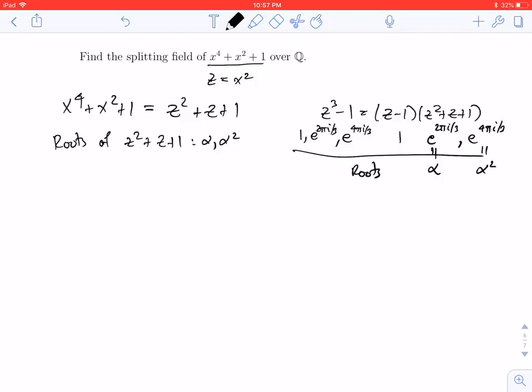But I wanted the roots of x to the 4th plus x squared plus 1. I know that z equals x squared, so my roots are the square roots of these. I'm going to raise them to the 1 half power. So the roots of x to the 4th plus x squared plus 1 are plus or minus alpha to the 1 half, and plus or minus alpha squared to the 1 half, which is just alpha.